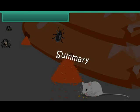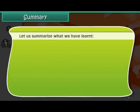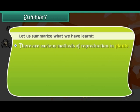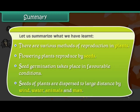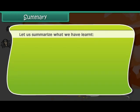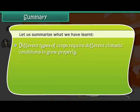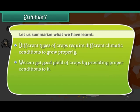Summary: there are various methods of reproduction in plants. Flowering plants reproduce by seeds. Seed germination takes place in favorable conditions. Seeds of plants are dispersed to large distances by wind, water, animals and man. Different types of crops require different climatic conditions to grow properly. We can get a good yield of crops by providing proper conditions and looking after them well.